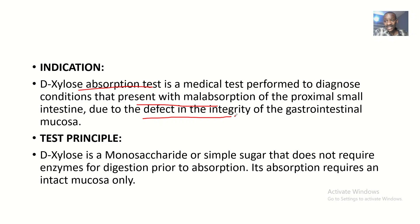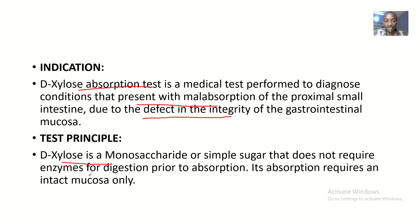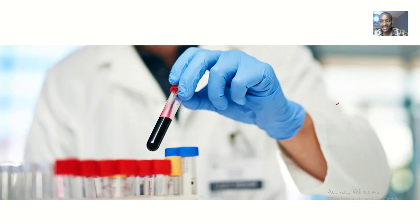When you perform a xylose test, you are looking at whether there is any malabsorption — whether nutrients are not being absorbed as they should. For the test principle, xylose is a simple sugar that does not require enzymes for digestion prior to its absorption. Its absorption requires an intact mucosa only — specifically, the integrity of the proximal small intestine. Once the integrity is intact, xylose will be absorbed and can be found in urine and blood.